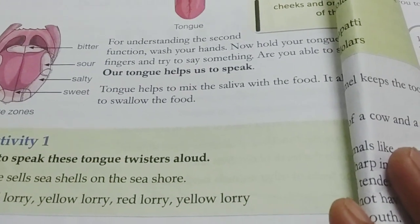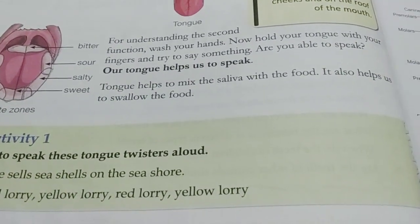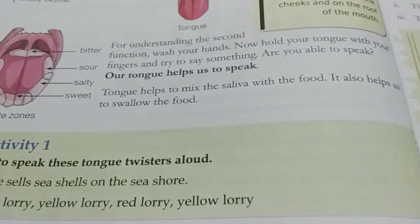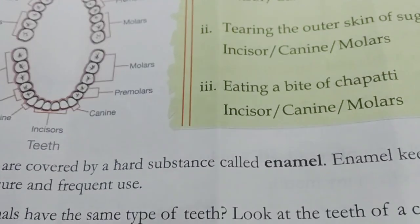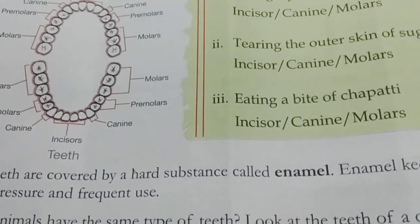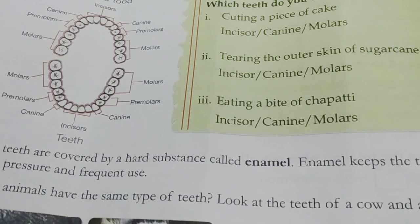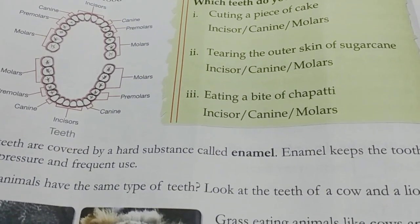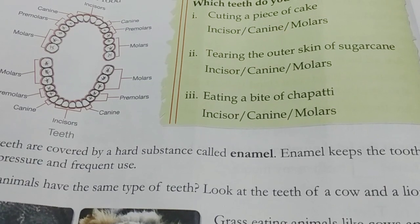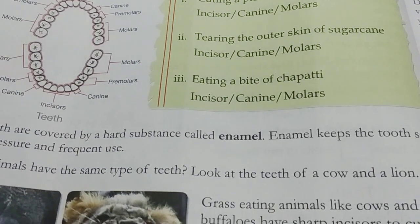Teeth are the hardest substance in our body. We have four types of teeth. Teeth help us to chew food, help us to speak clearly, and also give shape to our face.